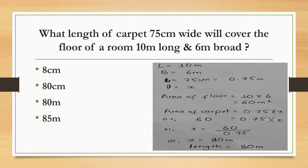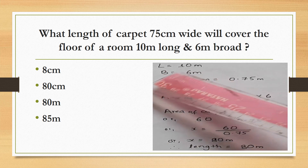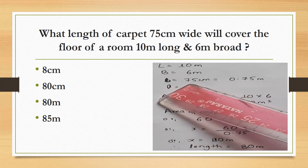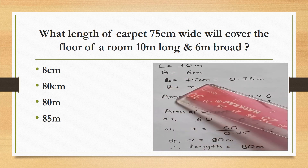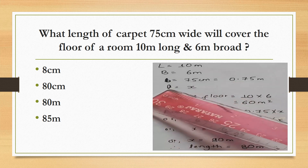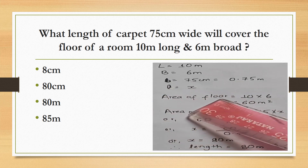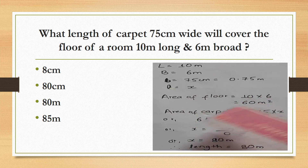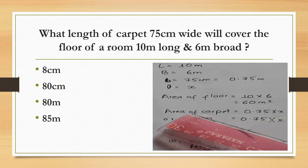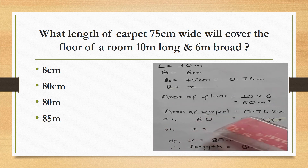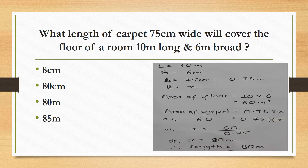What length of carpet 75 centimeters wide will cover the floor of a room 10 meters long and 6 meters broad? The room length is 10 meters and breadth is 6 meters, and the carpet width is 75 centimeters, that is 0.75 meters. The area of the floor is 10 into 6 equals 60 square meters. The area of carpet: 60 equals 0.75 into length x. Solving, x equals 80, that is the length is 80 meters.